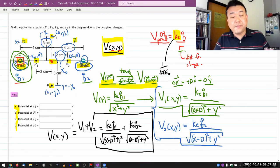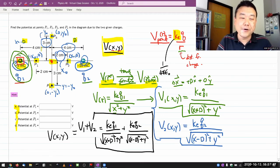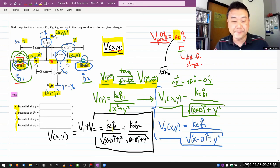k e q1 divided by square root of x plus d squared plus y squared plus k e q2 divided by square root of x minus d squared plus y squared. So once you have that, then the only remaining thing to do is the tedious task of plugging in each of these coordinates for the points 1, 2, 3, and 4. So you plug in the x and y values here, all the others are given constants, and you'll be done.